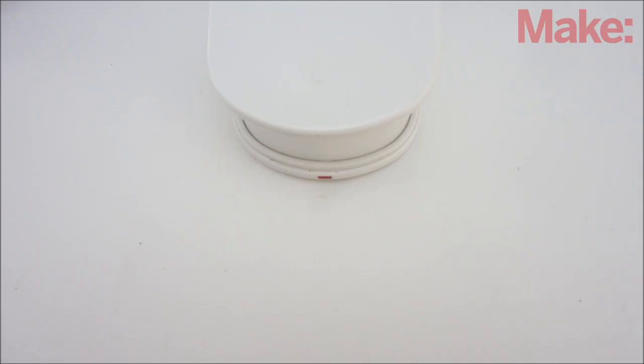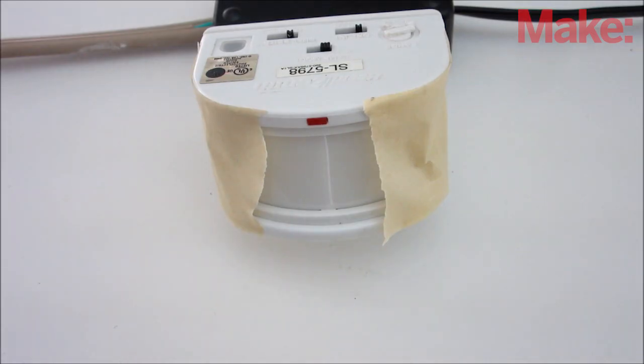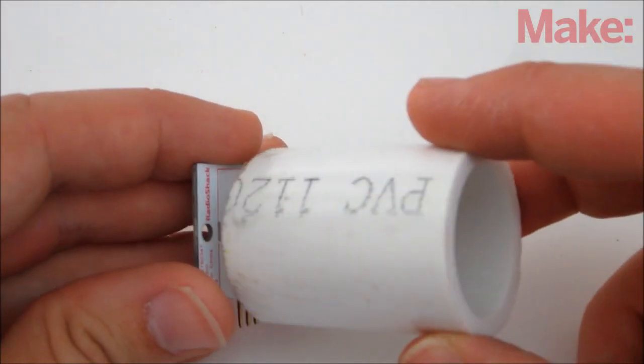If you need to make the motion sensor more focused, you can narrow the viewing angle by applying tape to the sides or by putting a small piece of pipe around it.